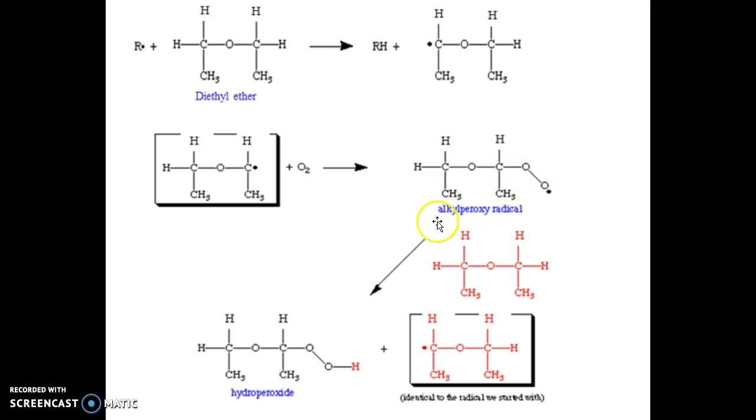This alkyl peroxy radical will then react with a second molecule of diethyl ether to form a hydroxy peroxide, and this generates an identical radical.